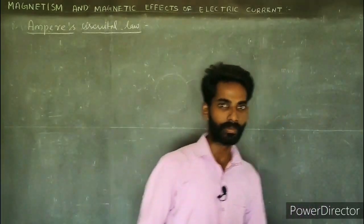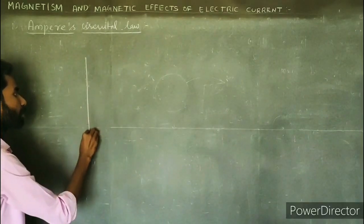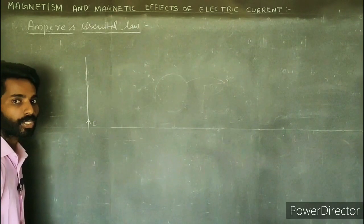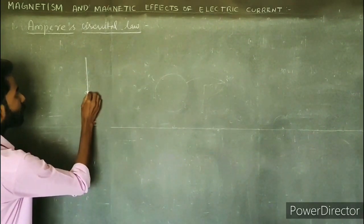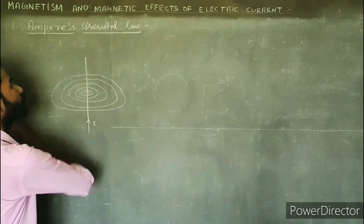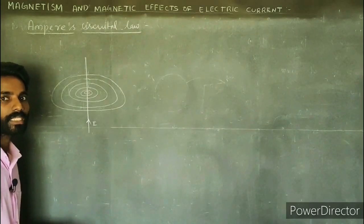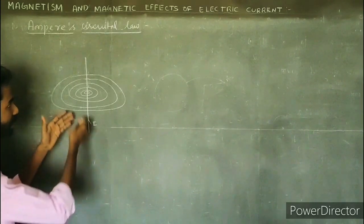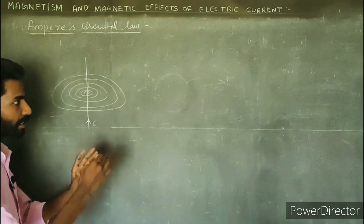Suppose you have a conductor — this is a conductor. What is the current passing in the conductor? We know how a current-carrying conductor produces a magnetic field. We can do this using the right-hand thumb rule: the conductor carries current and the magnetic field wraps around it.